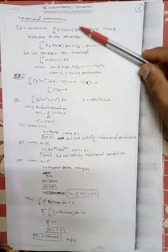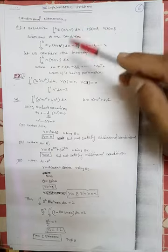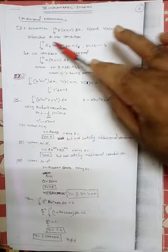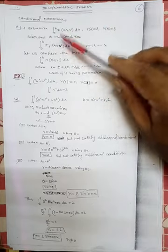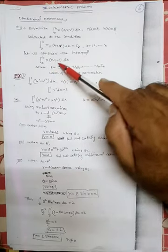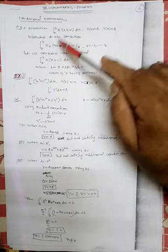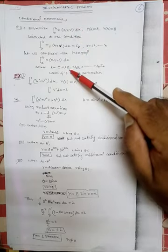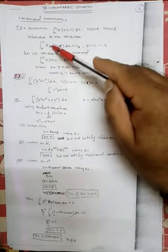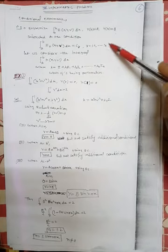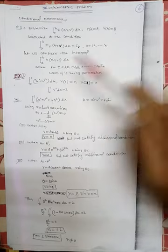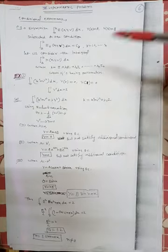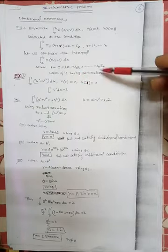To solve this, we take the linear combination of the integrand from the main functional and the integrands from the additional conditions. So we consider the integral from a to b of K(x, y, y') dx, where K = f + λ₁g₁ + λ₂g₂ + ... + λₙgₙ. Here the λ's are parameters. Then we apply Euler's equation as usual.